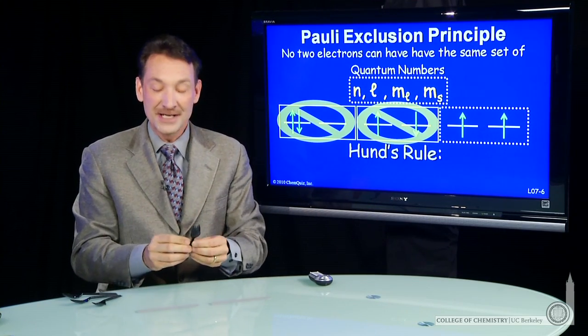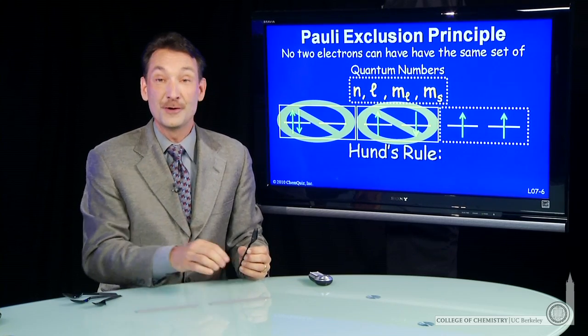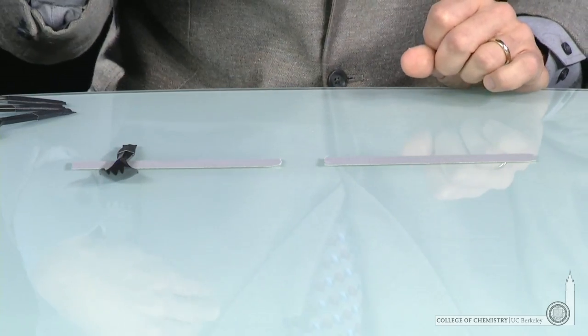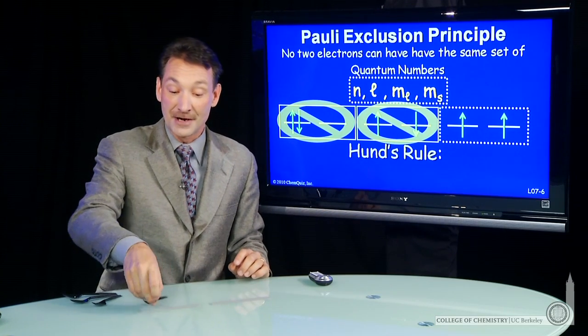So let's bring in some sporks as electrons to these two energy levels. The first one can go in either spin up or spin down. If there's no other spins there, then it doesn't matter.